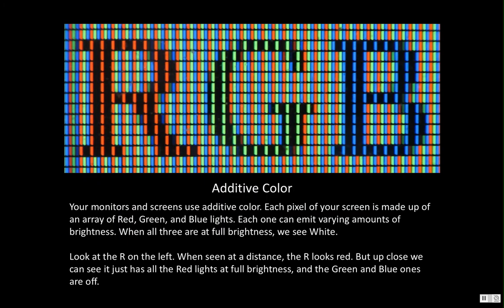If you look at a monitor — here's a really zoomed in picture of one — monitors use the additive color system, which means more color equals more brightness, which equals closer to white. Every pixel of your screen is made up of three little LED lights: one red, one green, one blue. The varying brightness of those three LEDs results in the color you see. Stepping back, the letter R looks red from a distance because all the little red LED lights in that area are on at full brightness, and the green and blues are off.